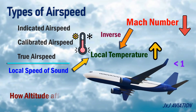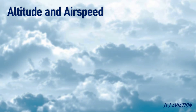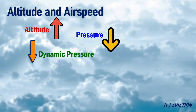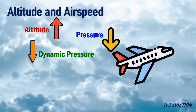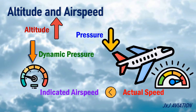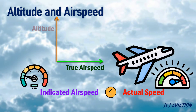Now let's look at how altitude affects the airspeeds. As the altitude increases, pressure decreases, and the dynamic pressure also decreases. To understand the variation of indicated airspeed with altitude, we will plot a graph with true airspeed on the x-axis and altitude on the y-axis.